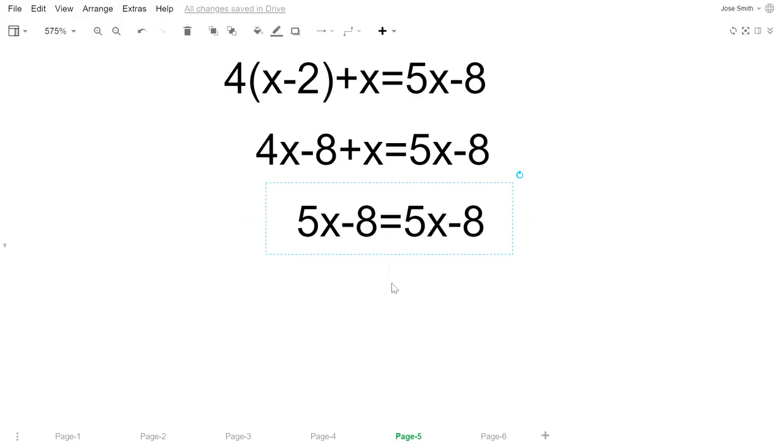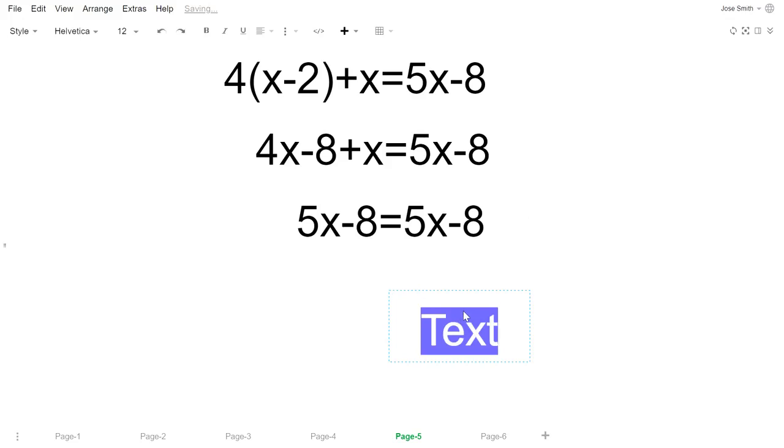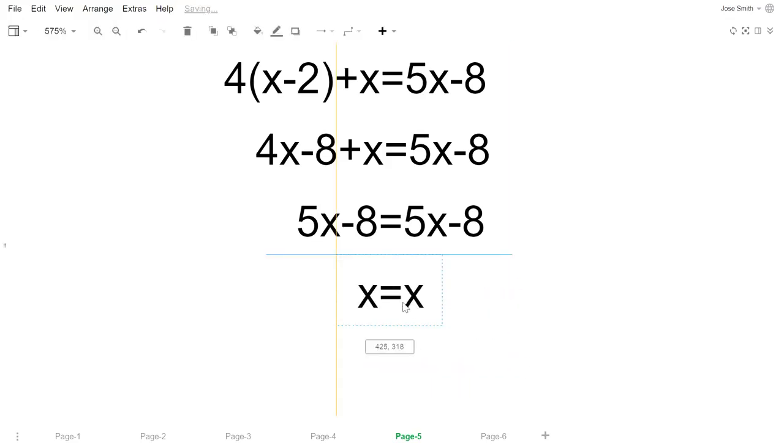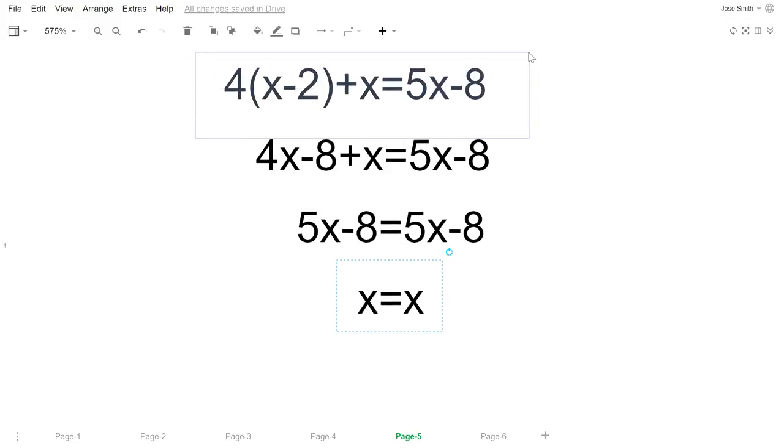If you want, you could keep simplifying this. Let's add 8 to both sides, that would give us 5x equals 5x. Let's divide by 5 for both sides, it gives you x equals x. So eventually you get to this. It's not necessary, but you get one value equals itself. When you get this, it means that there is an infinite amount of solutions.